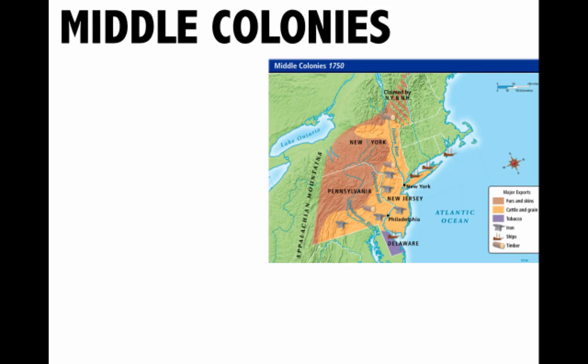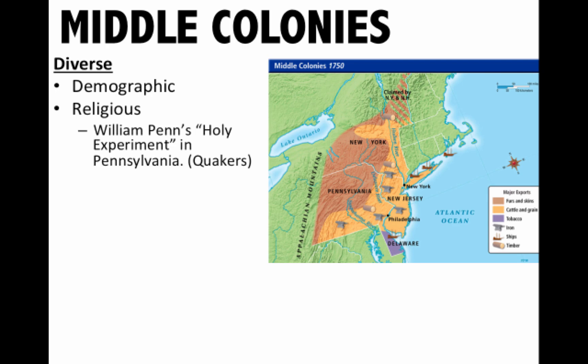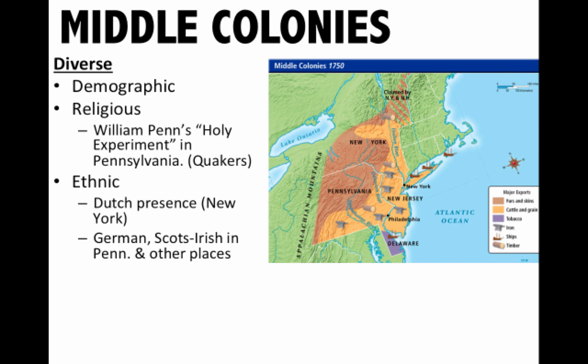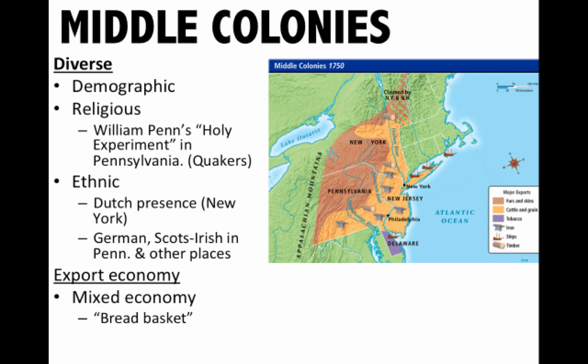The middle colonies were very unique and distinct — very diverse demographically, with a mixture of people coming over, including large numbers of families in places like Pennsylvania. There was also great religious diversity; for instance, the Quakers in Pennsylvania under William Penn's 'holy experiment' offered religious freedom for all and a great degree of freedom for women. New York had a Dutch presence before England took over and renamed it. German and Scots-Irish immigrants came to places like Pennsylvania. The economy was mixed, largely based on wheat growing, earning it the title 'breadbasket of the colonies.'